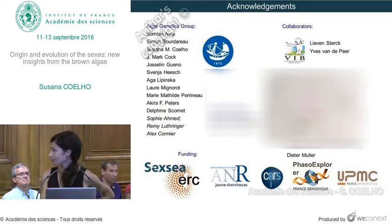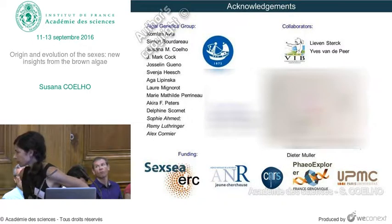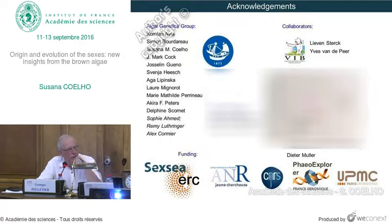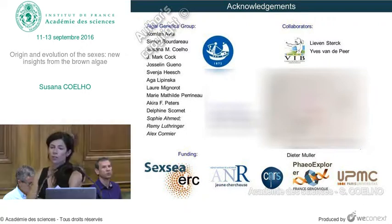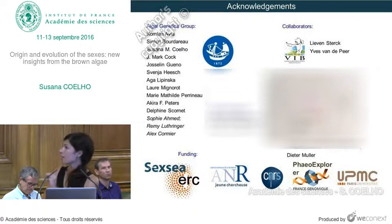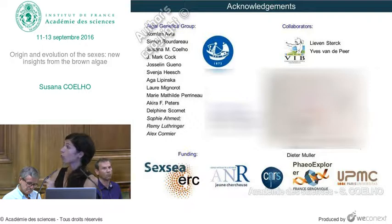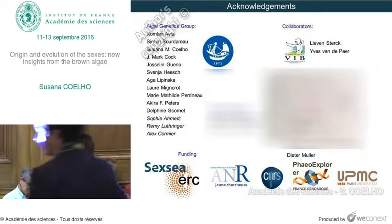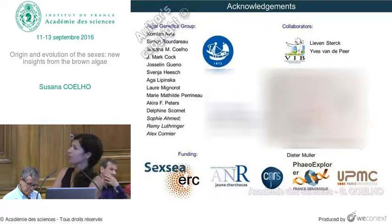Question: How do brown algae transition from the UV system you described to systems like Fucus, where you have diploid male or female individuals? Answer: These are actually independent — the sex chromosomes of Fucus are different chromosomes, not the same as in Ectocarpus. It's likely an XY or ZW system, and it emerged independently from the UV system I described here. That's all we know for now — it's in our list to study further.